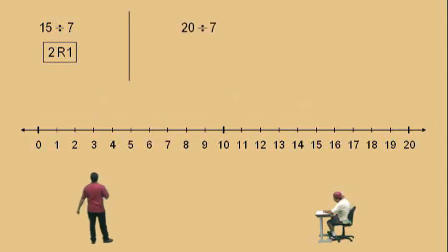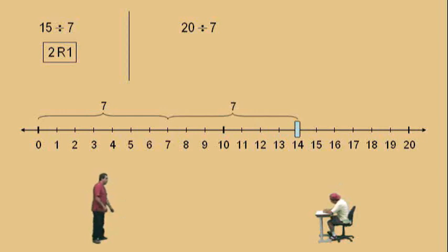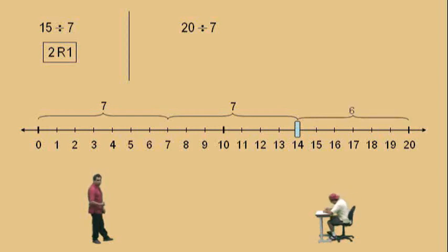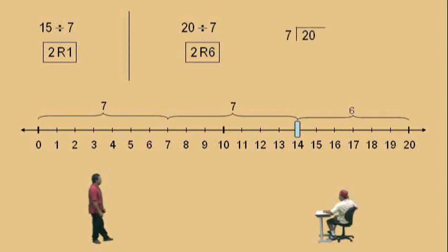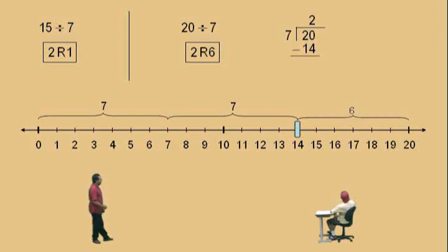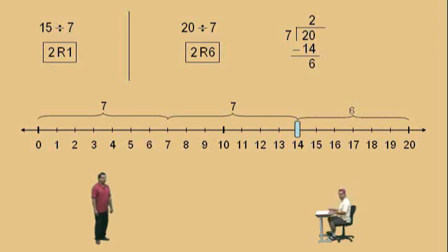How about 20 divided by 7? One 7, two 7s is 14. 7 times 2 is 14. How many units are left over? 6 — because 20 subtract 14 is 6. So our answer is 2: how many times does 7 go into 20? 2 times, with a remainder of 6 units. And if we do the long division: 20 is our dividend, 7 is our divisor. 7 goes into 20 two times; 2 times 7 is 14. Then subtract: 20 subtract 14 is 6. So your answer is 2 with a remainder of 6.